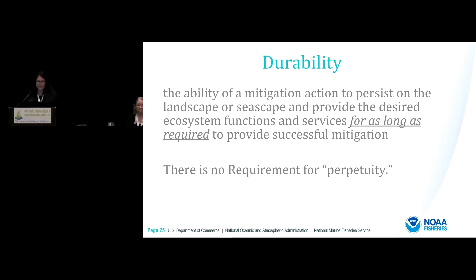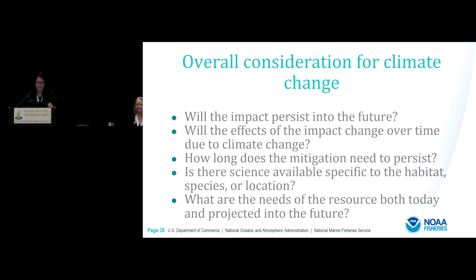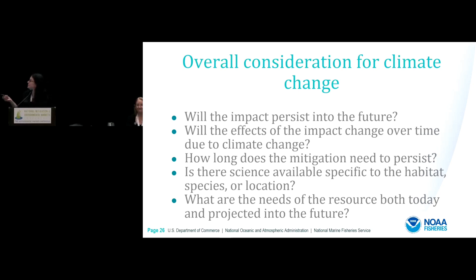Dynamic environments require some flexibility in the way we think about durability. In the NOAA mitigation policy, we link durability to the goals of mitigation — in some cases this may be permanent or in perpetuity, and in other cases it may be for a shorter length of time. Overall, considerations related to mitigation in dynamic environments include how climate change will affect the impact site, what it means for appropriate compensatory mitigation, and what are the needs of the landscape or seascape now and into the future. NOAA has published climate guidance for EFH and Endangered Species programs, as well as resources from USGS, Corps, and Fish and Wildlife Service.